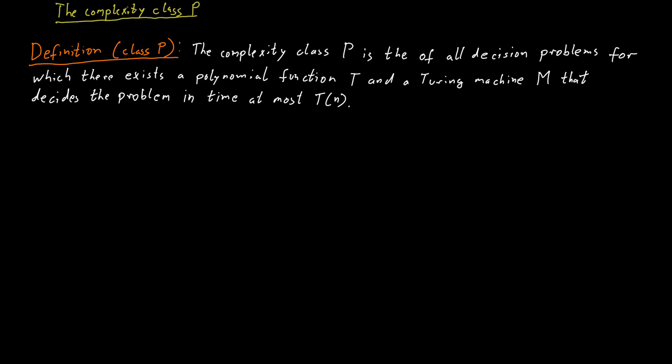Of course, we want our complexity classes to be meaningful, and we want the complexity class P to be meaningful as well. For the class to be meaningful, it has to be somewhat robust. Here we are talking about Turing machine as the formal model of what computation is.